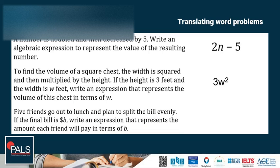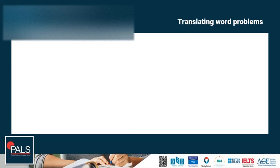Another example. Five friends go out to lunch and plan to split the bill evenly. If the final bill is B dollars, write an expression that represents the amount each friend will pay in terms of B. If the bill is divided evenly, the total will be divided by 5. Because the bill is B dollars, the cost to each friend will be B divided by 5, or B over 5 dollars.